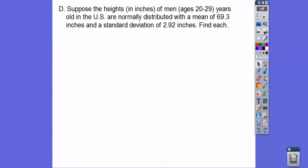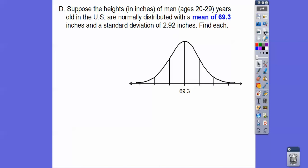Let's try this. So suppose the heights and inches of men ages 20 to 29 years old in the United States are normally distributed with a mean of 69.3 inches and a standard deviation of 2.9 inches. Find each. All right. Let's first do this, you guys. There's my mean of 69.3 inches.